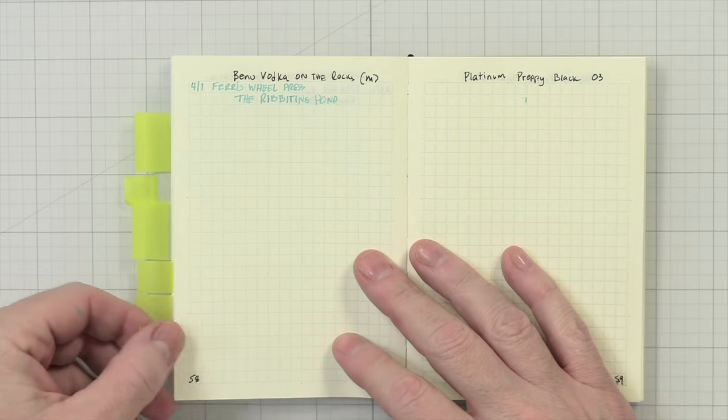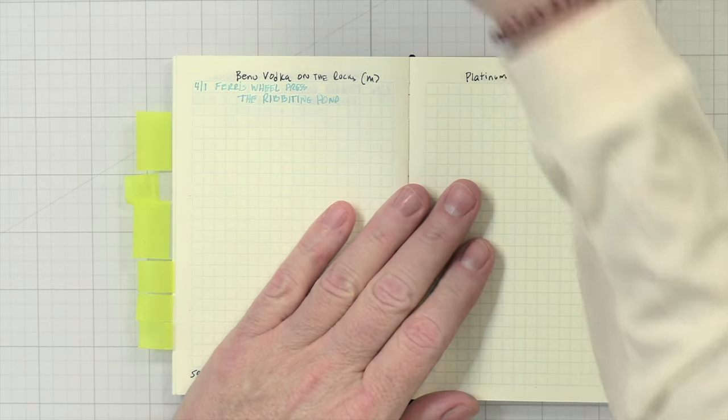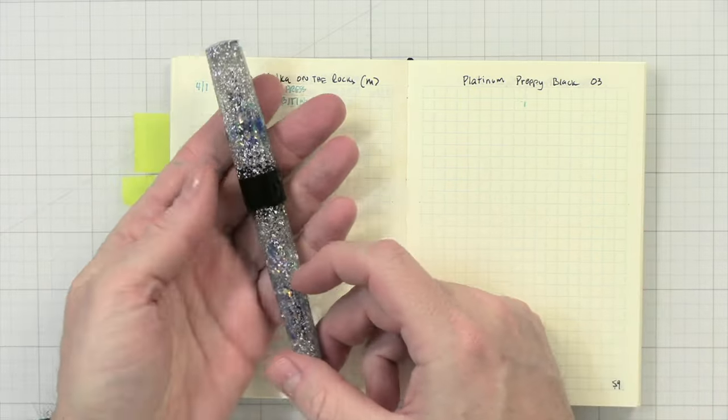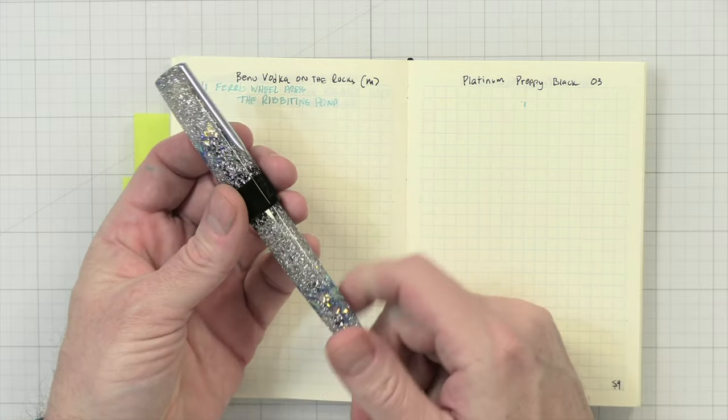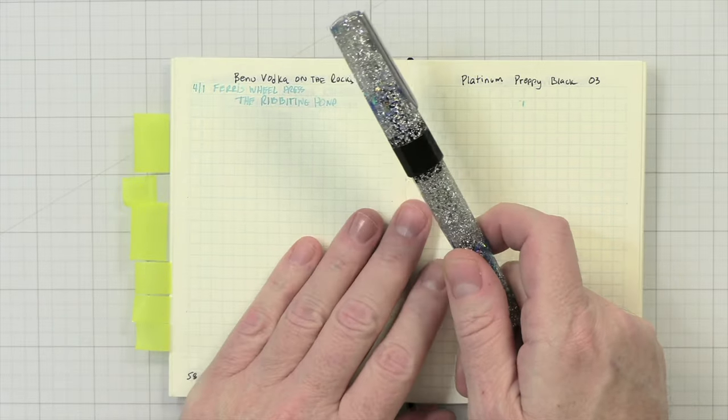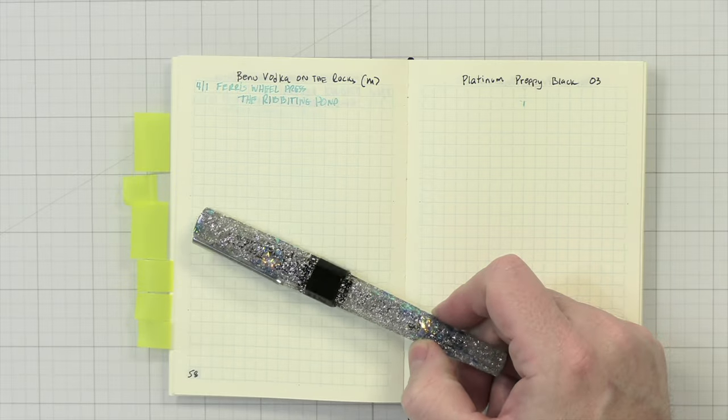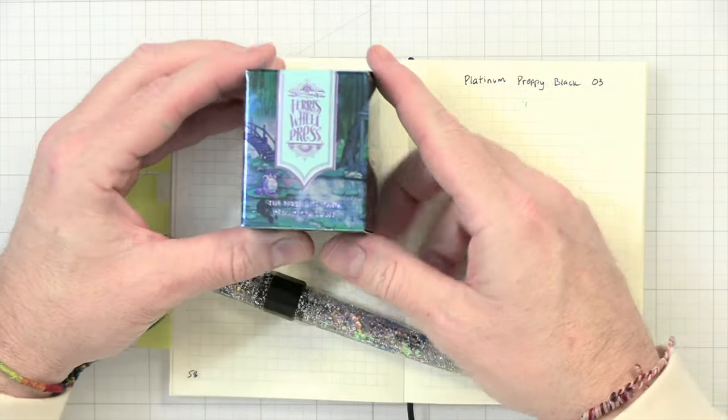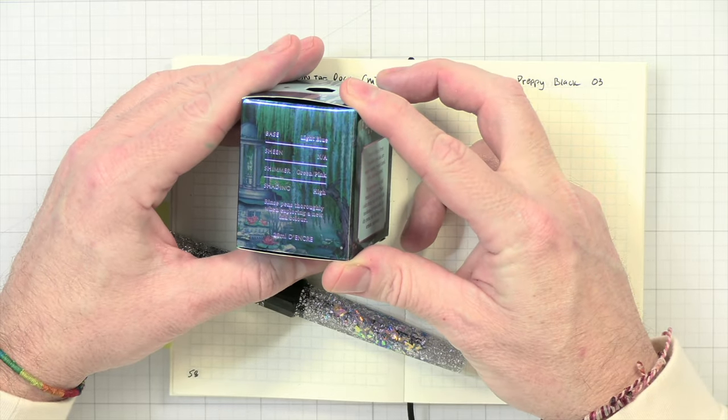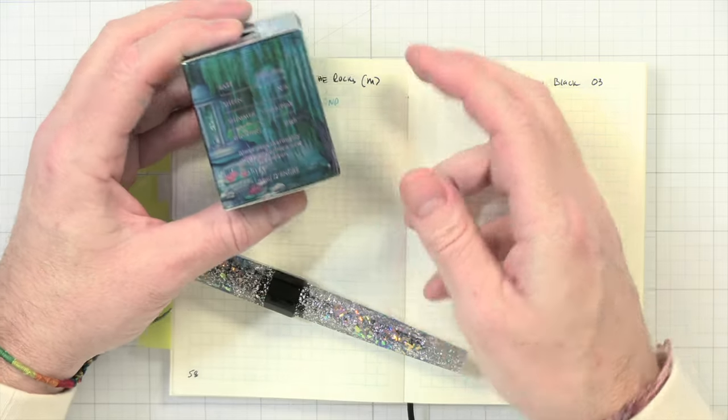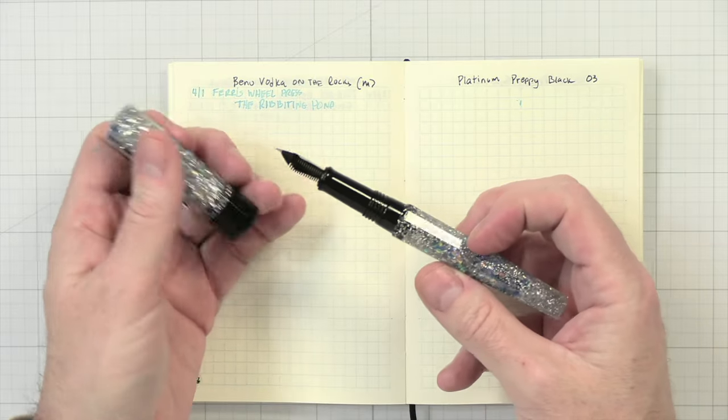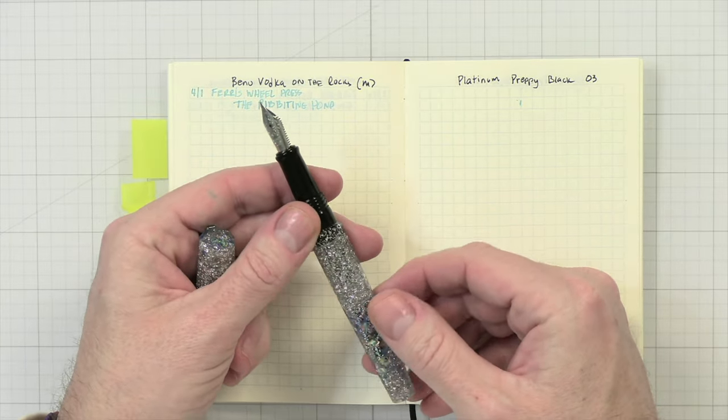And then last but not least, I have my Benu Vodka on the Rocks. And you guys, I love this pen. I debated on if I wanted to use it this month, but it's been sitting unused for about two months. And in this one, this one is inked up with Ferris Wheel Press, the Riveting Pond. This has a light blue base with a green pink shimmer, and it has a high shading quality on it. It's big, it's chunky. I love a chunky pen. And it's also a medium nib.